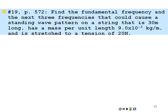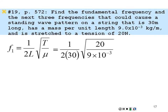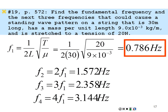Example: Find the fundamental frequency and the next three harmonics for a string that is 30 m long, has a mass per unit length of 9 × 10⁻³ kg/m, and is stretched to a tension of 20 N. The fundamental is f₁ = (1/2L)√(T/μ) = (1/60)√(20/0.009) = 0.786 Hz. The second harmonic is 1.57 Hz, the third is 2.36 Hz, and the fourth is 3.14 Hz.